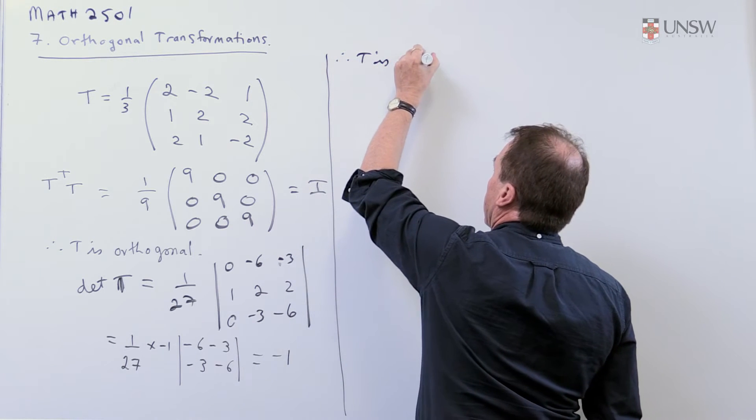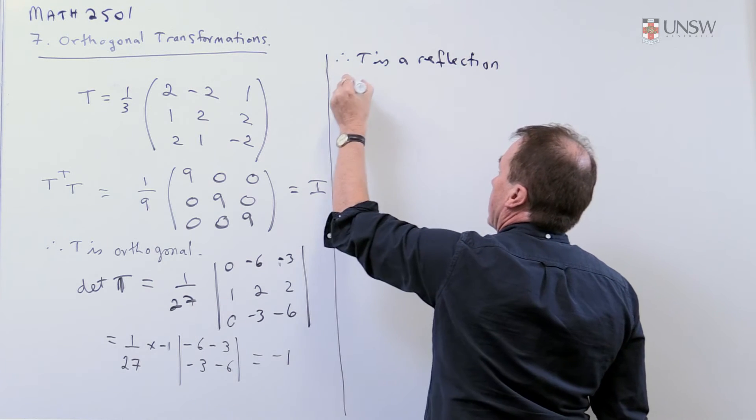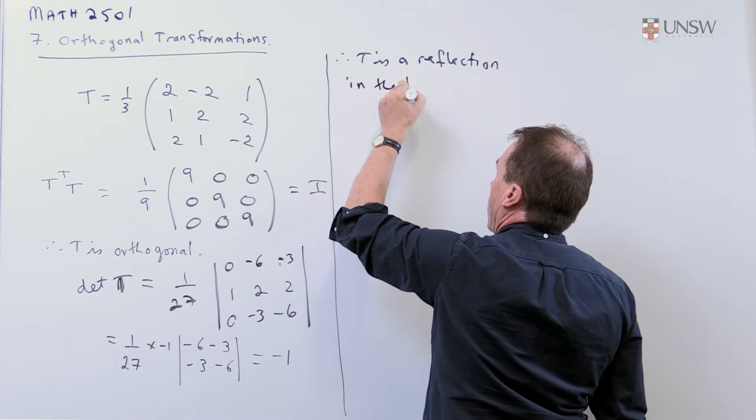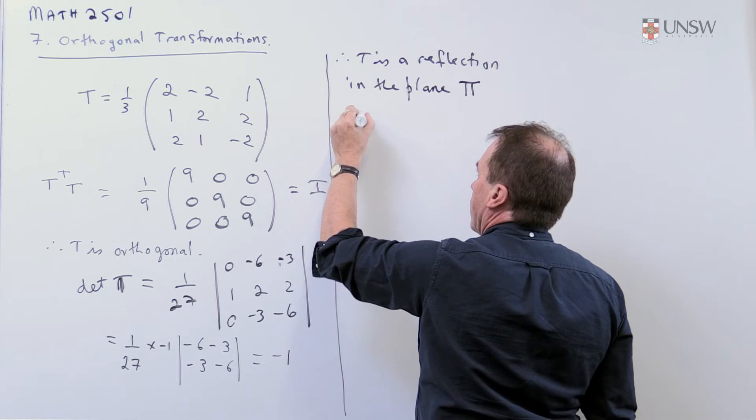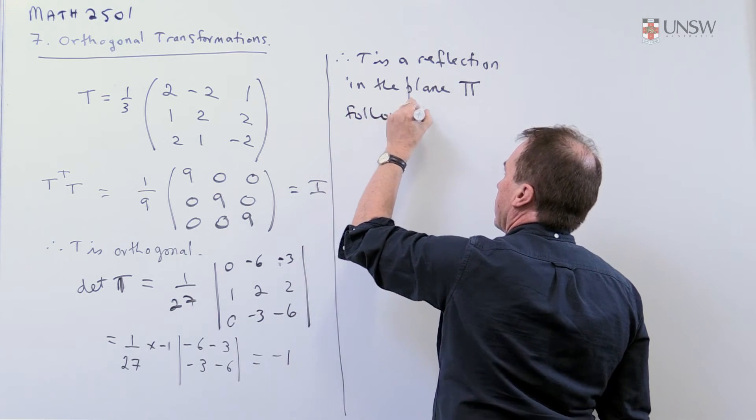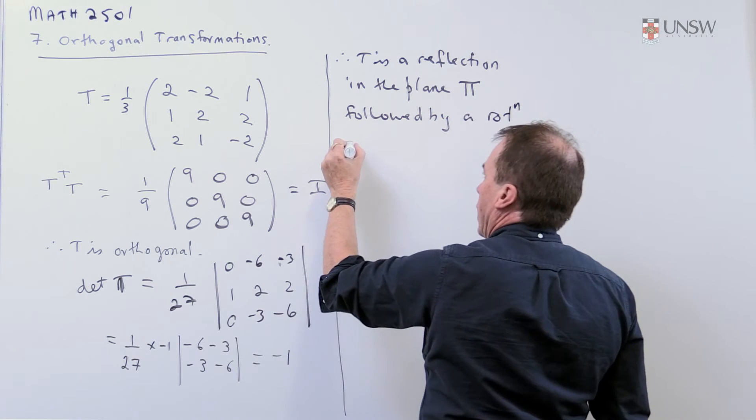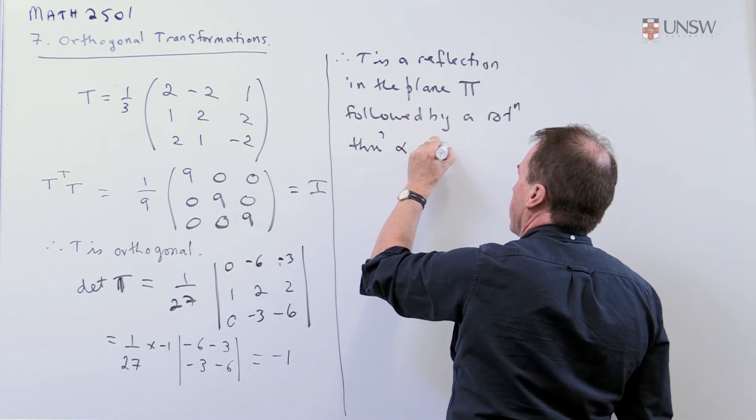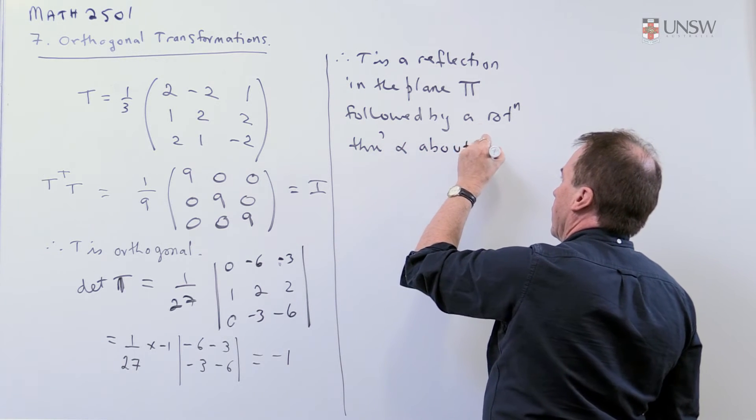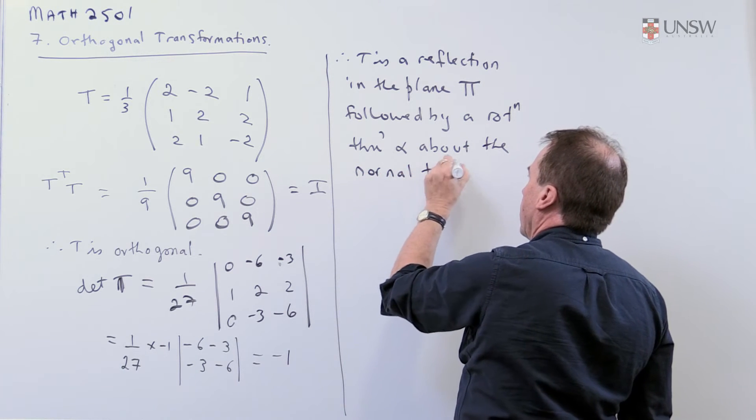So in conclusion, therefore, T is a reflection in the plane, which I'll call capital Pi, followed by a rotation through an angle alpha about the normal to the plane.